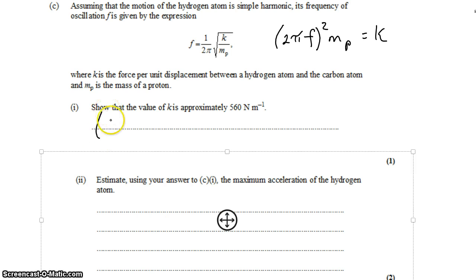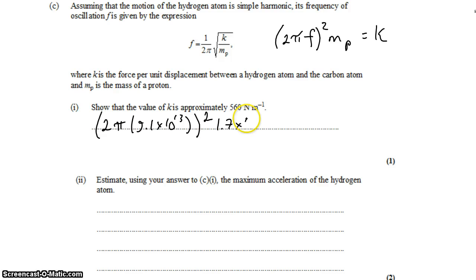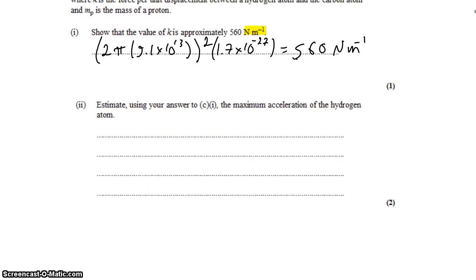So k is equal to 2 pi times the frequency, 9.1 times 10 to the 13 hertz squared, times the mass of a proton, 1.7 times 10 to the negative 27 kilograms. You punch that into your calculator and you get about 560. And the units, of course, are newtons per meter.